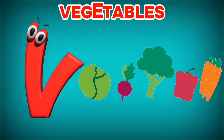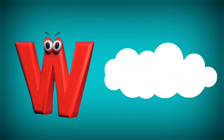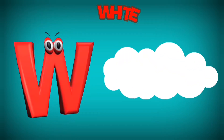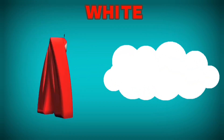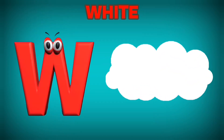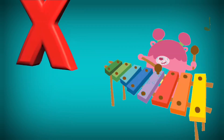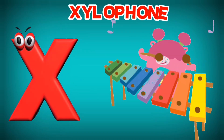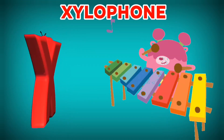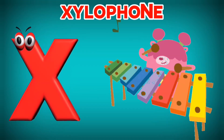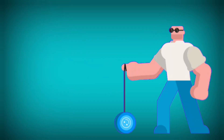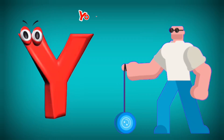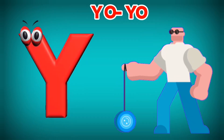Vegetables. W is for White. W, W. White. X is for Xylophone. X, X. Xylophone.